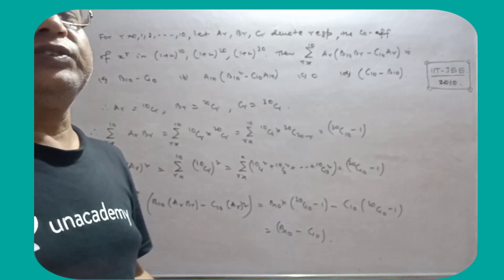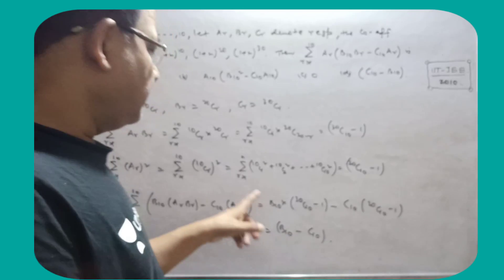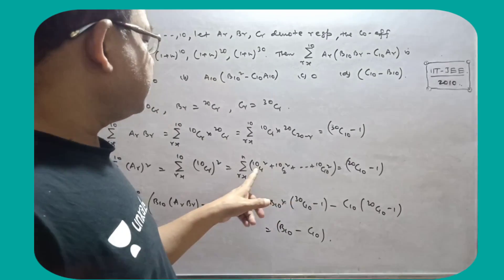It is equal to C0 squared plus C1 squared plus up to Cn squared equal to 2nCn. So this is n.